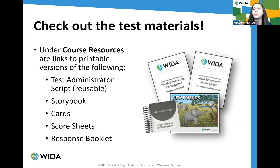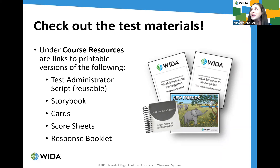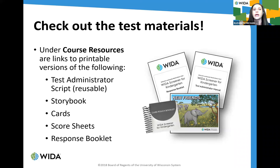To ease students into the screening process, TAs first invite them to listen to a short, engaging, age-appropriate story read aloud — called 'New Friends' — whose main characters are a young elephant and a bird spending the day doing activities familiar to four, five, and six year olds: eating, playing, and exploring the world. This provides both pictures to engage students and actual stimulus for test items. Students interact directly with pictures in the storybook and with manipulative cards.